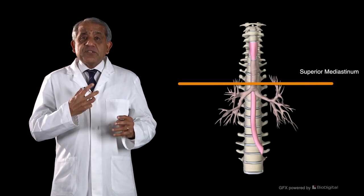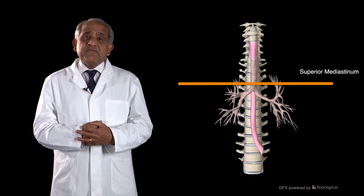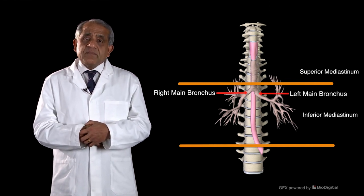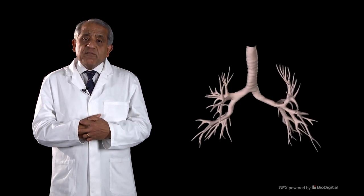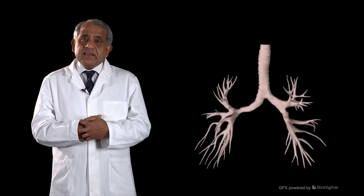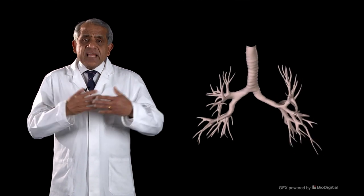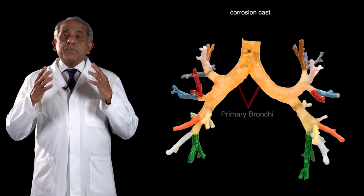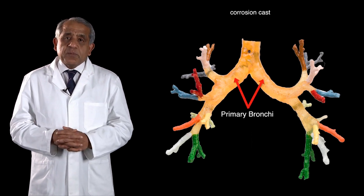The trachea runs into the superior mediastinum, crosses into the inferior mediastinum, and breaks up into the right and left bronchi. The very same cartilaginous rings that reinforce the tracheal wall continue to reinforce the bronchi and a good deal more of the bronchial tree. Each is called a primary bronchus, because it is the structure that enters the corresponding lung.